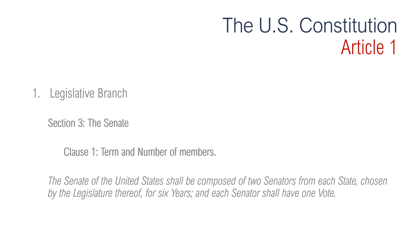Since the 17th Amendment was passed in 1913, all senators have been elected directly by the voters of the state during the regular election. So instead of being voted in by the House, they are now voted in by the people.